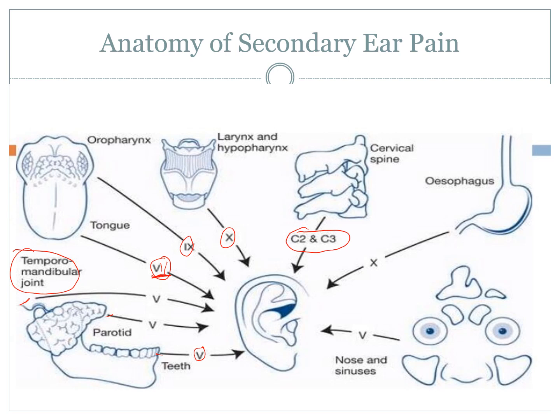This is very similar to cranial nerve 9, the glossopharyngeal, where you get referred pain from the other part of the tongue and the oropharynx. Cranial nerve 10, the vagus nerve, can carry referred pain from the sinuses, thyroid gland, pharynx, and larynx, but it can also be referred pain from disorders of the heart, the lungs, and certain components of the gastrointestinal tract. As you can imagine, the potential causes of ear pain just keep spreading.